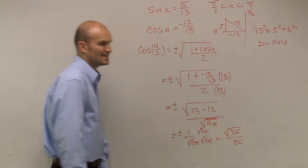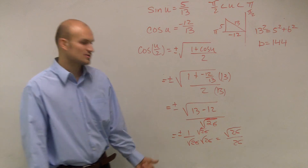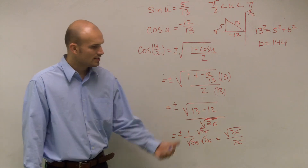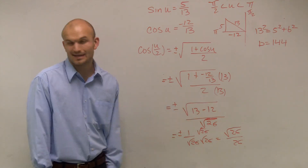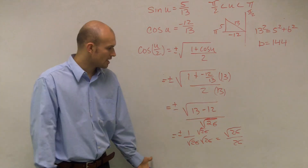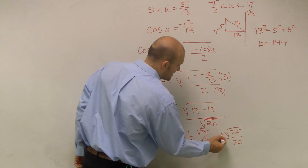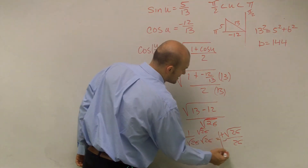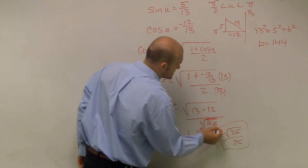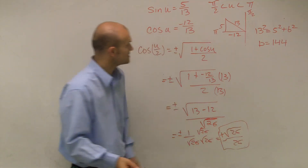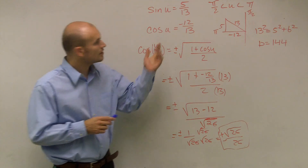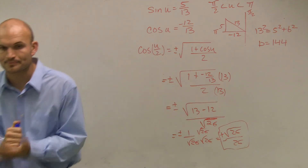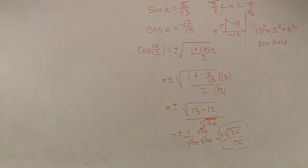After rationalizing the denominator, I end up with radical 26 over 26. Checking my perfect square numbers — 4, 9, 16 — I confirm I cannot reduce the square root of 26. So the final answer is plus or minus radical 26 over 26. And that's how you find the half angle formula value for cosine. Thank you.